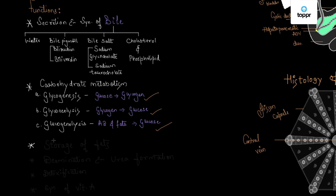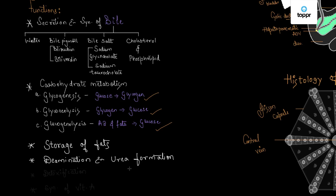The liver also helps in the storage of fat. Next, it helps in deamination and urea formation - excess protein is broken down in the liver, producing a toxic substance called urea. Urea is formed in the liver but excreted by the kidneys. The liver also performs detoxification of drugs and poisons. It is responsible for the synthesis of vitamin A, and during fetal development it performs hemopoiesis - the formation of RBCs and WBCs.